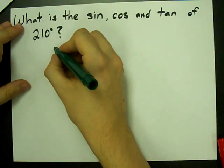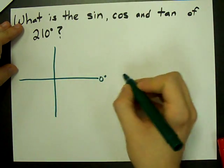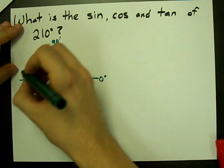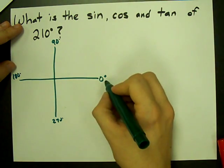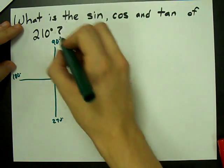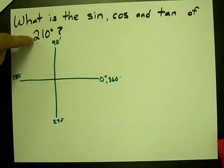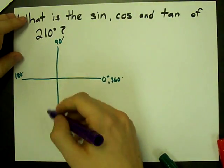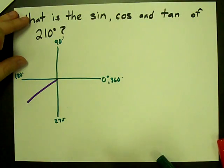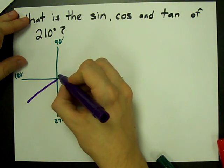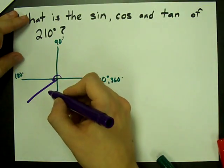So here's my grid. Remember, this is 0 degrees. We call this 90, 180, 270. You can call this 360 if you want and keep going. But the point is that 210 degrees lies somewhere between 180 and 270. There we go. This angle is 210 degrees. It's a little more than 180, it's actually 210.